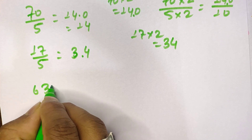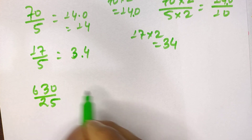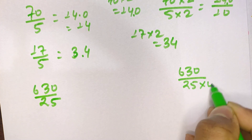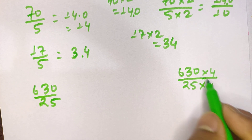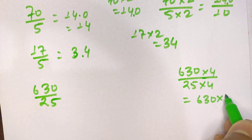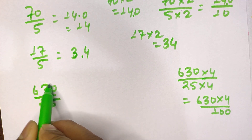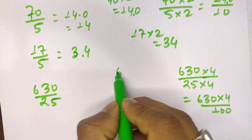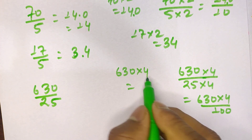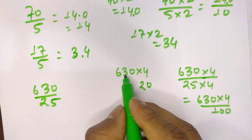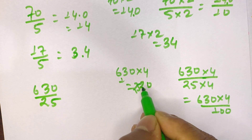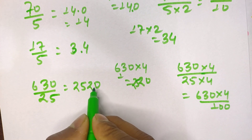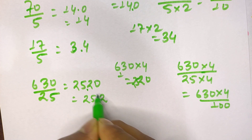Now let's try dividing by 25. First question: 630 divided by 25. Since 25 times 4 equals 100, we multiply both numerator and denominator by 4: 630 times 4 divided by 100. Calculating 630 times 4: 0 times 4 is 0, 3 times 4 is 12 (carry 1), 6 times 4 is 24 plus 1 is 25, giving us 2520. We place a decimal point after two digits from the last, so the answer is 25.20.